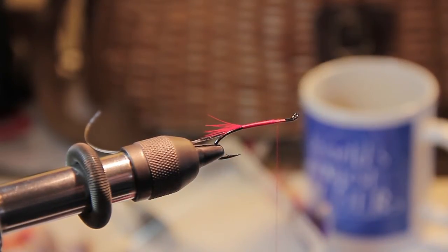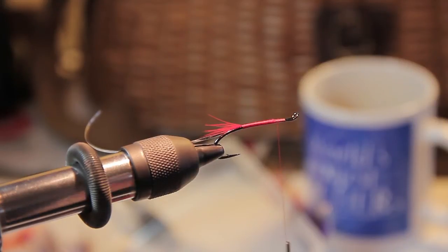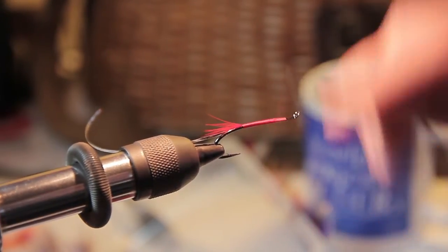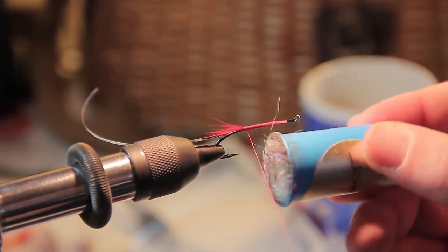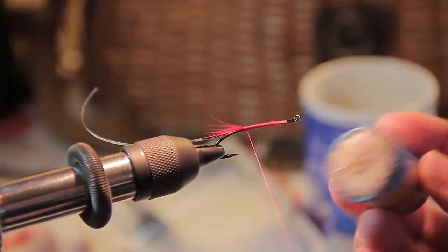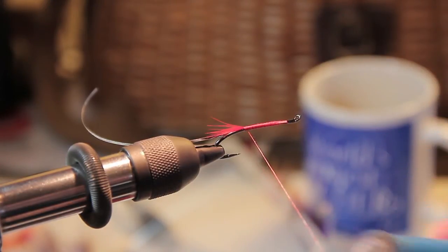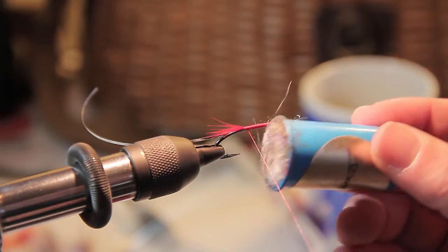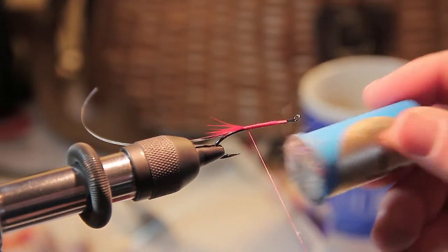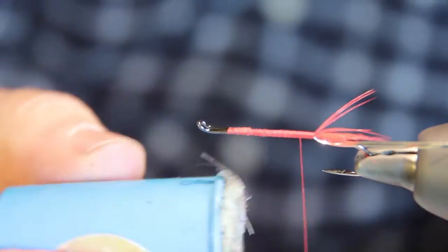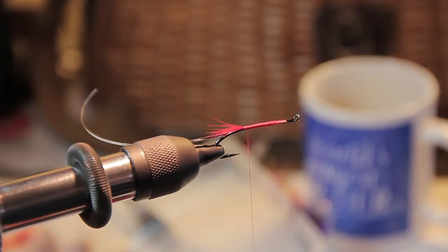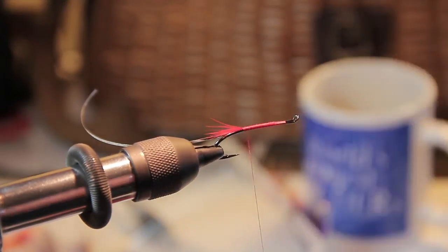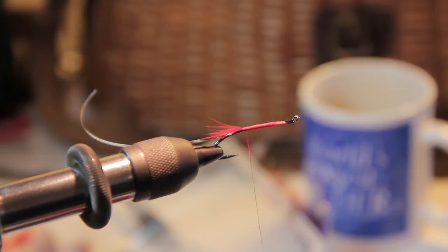Let's go ahead and spiral our thread back and wax up some thread. I like to use a pretty gummy, tacky wax. This is Betts Wax. I've had this for 24 years now. I don't think I've ever pushed this up. It's just been lasting me that long. So I wax up a section of my thread and then we will start to dub a purple body.